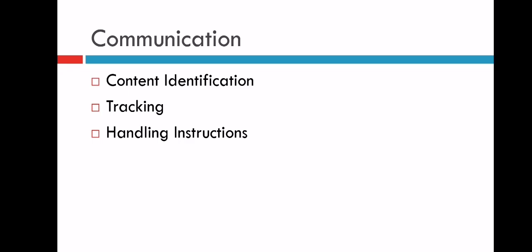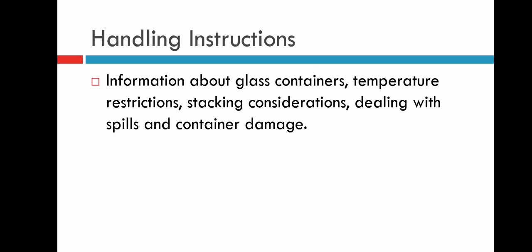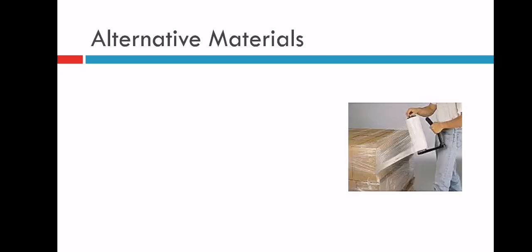Content identification includes manufacturer, product type, container, UPC visibility. Handling instructions include information about glass containers, temperature restrictions. All these instructions need to be given on the boxes. This is the shrink wrap I was talking about. You can see there's a roll and they are attaching it to the product and it will get stuck with the product.